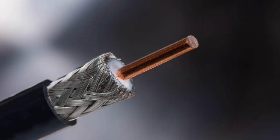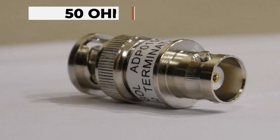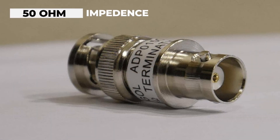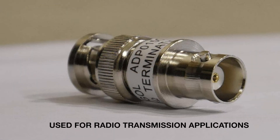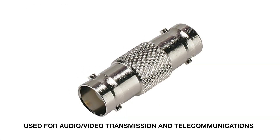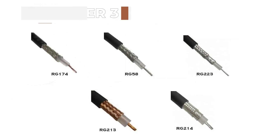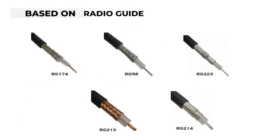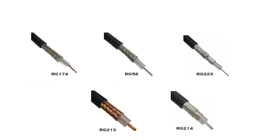Now, we have cables based on impedance. First, 50-ohm impedance — 50-ohm cables are typically used for radio transmission applications, because 50 ohms is a suitable match for different transmitter antennas and radio transmitters. Second, 75-ohm impedance — 75-ohm cables are commonly found in houses and are commonly used for audio and video transmission and telecommunication. Third, based on radio guide or RG standard — the RG standard is used for classifying coaxial cables.